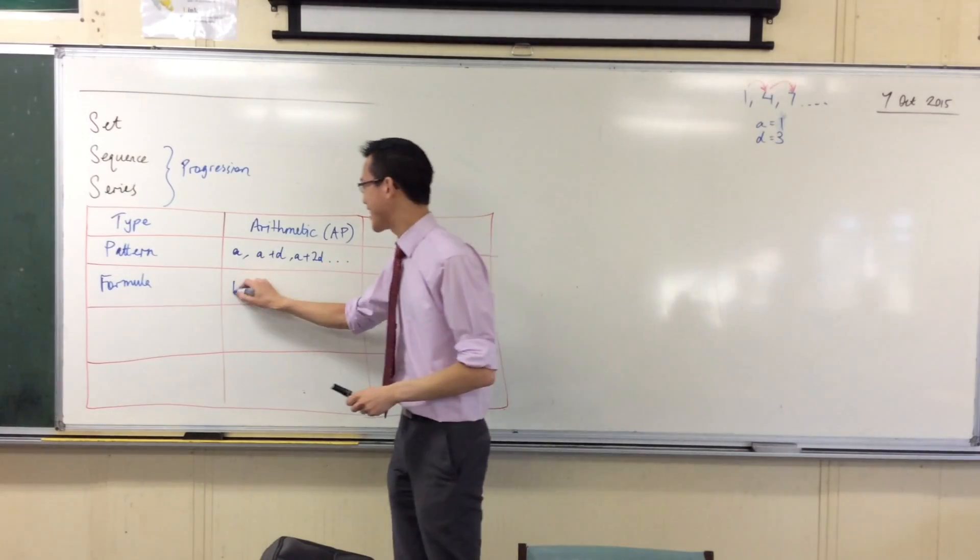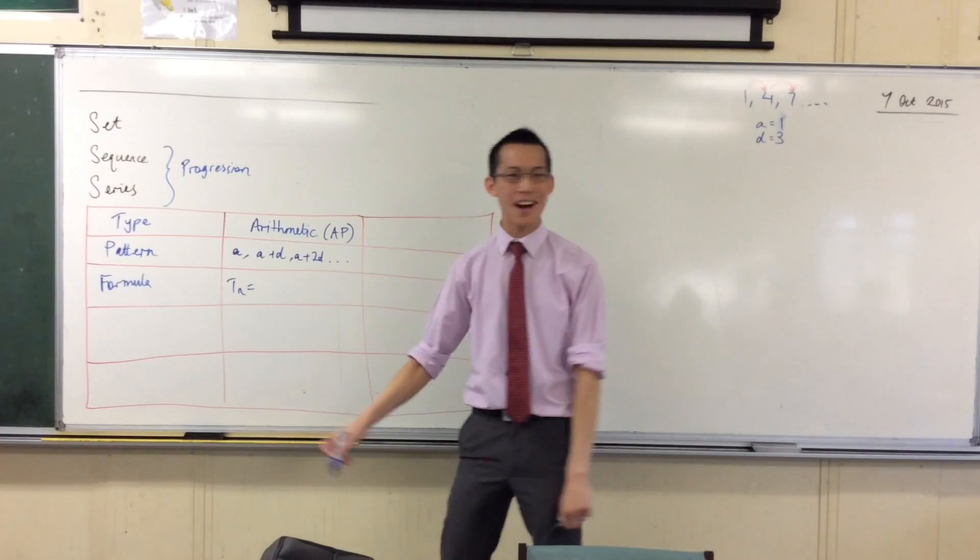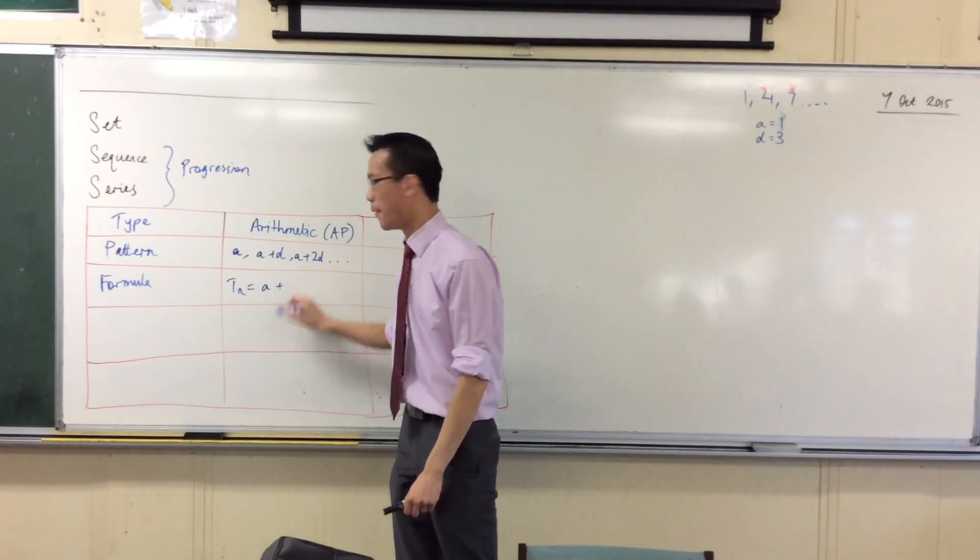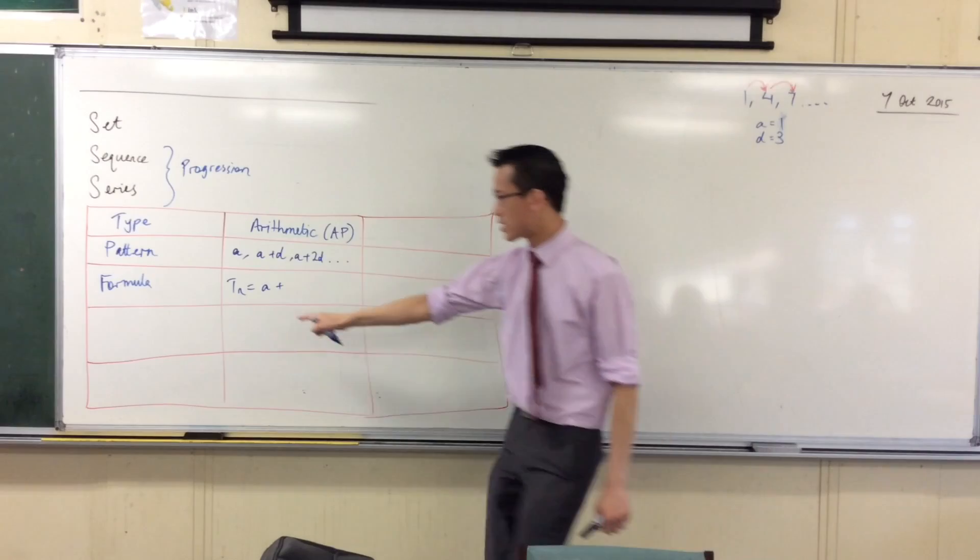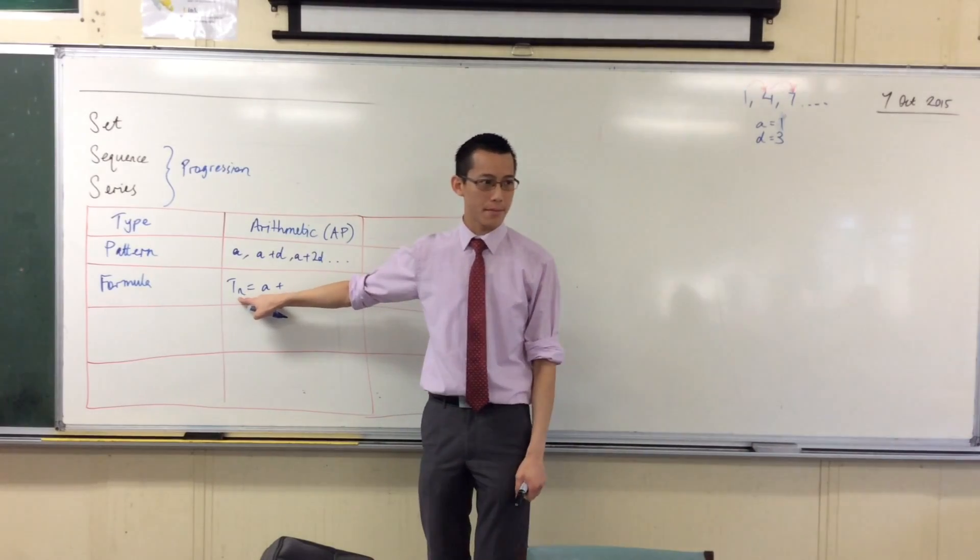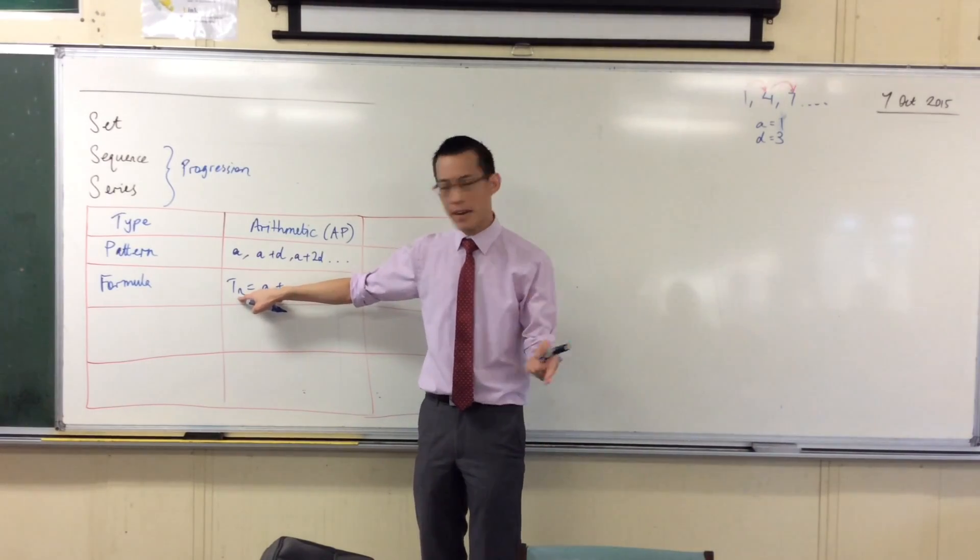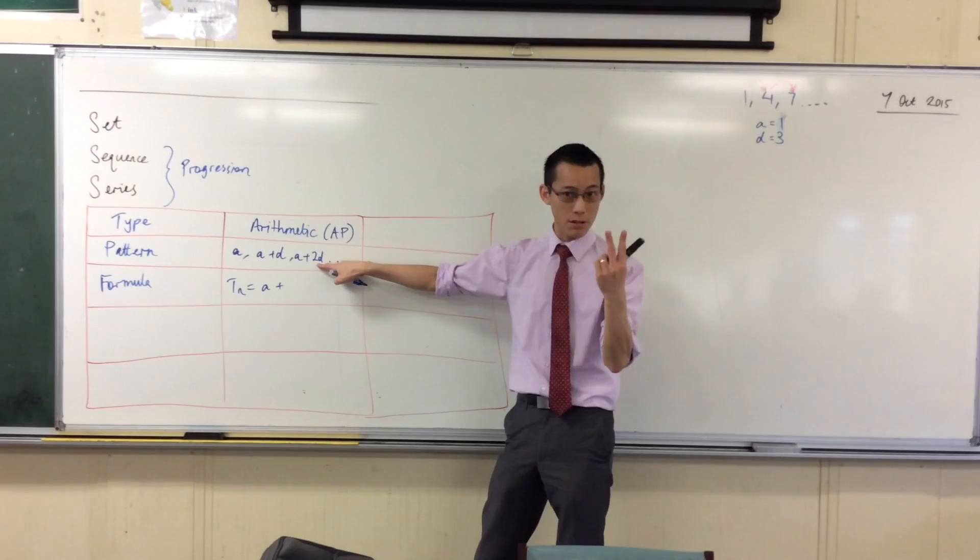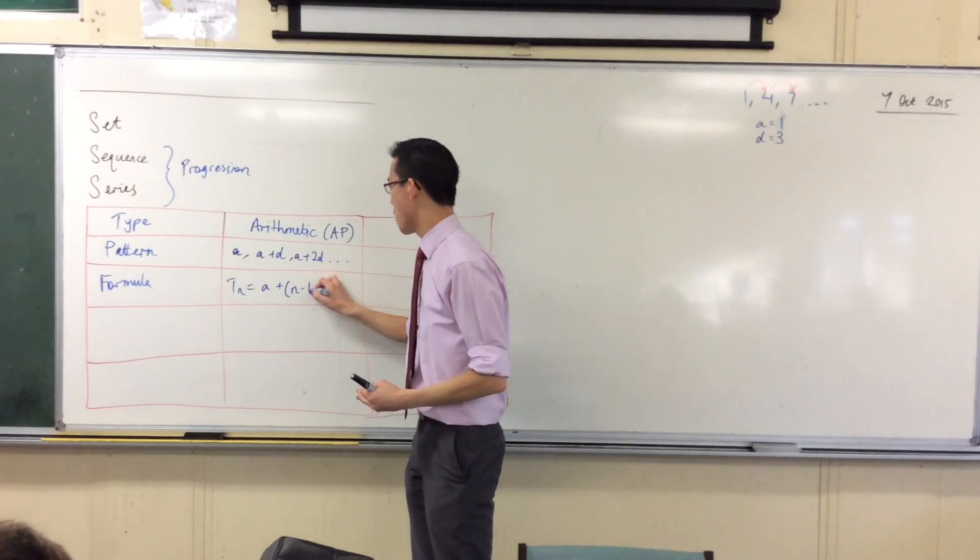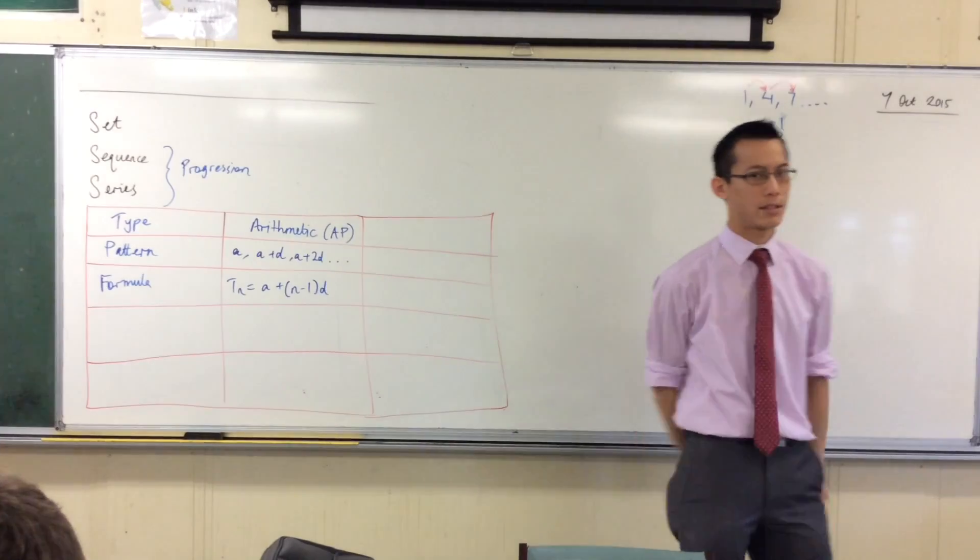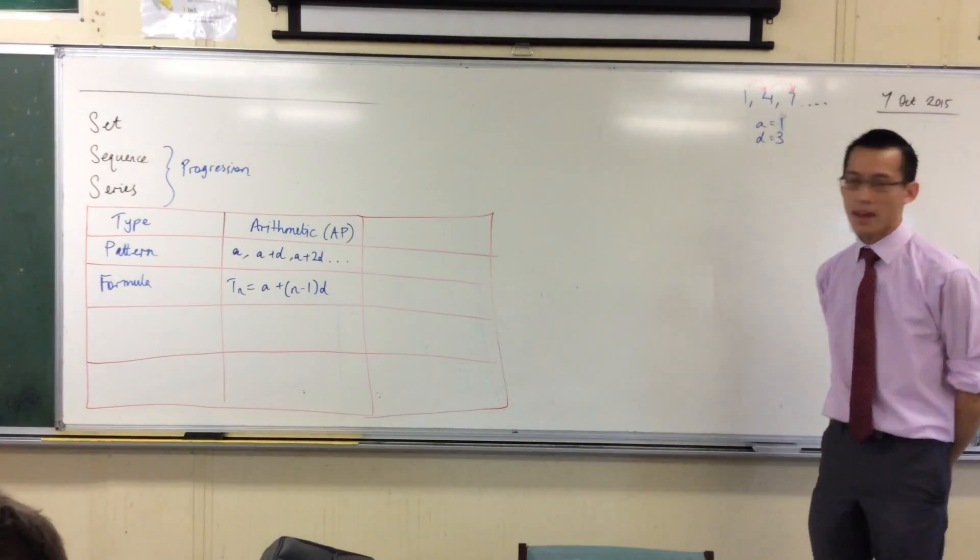Two. So to get the nth term, I'm always going to start with that first term. But what do I add? How many lots of the difference do I need to add to get to the nth term? And it's not, yeah, it's going to be n minus one, because for the third term I'll need two. For the fourth term, I'll need three. It's always one less. So n minus one lots of the common difference, that's how I get to the nth term.